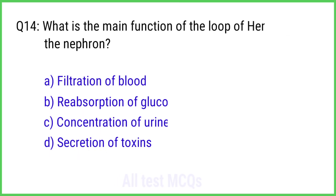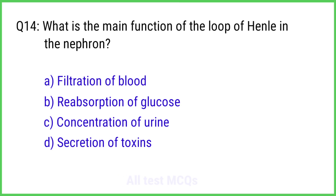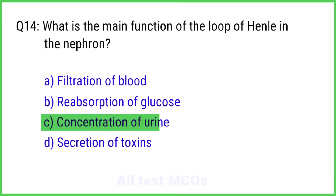Question No. 14. What is the main function of the loop of Henle in the nephron? The correct answer is Option C: Concentration of urine.